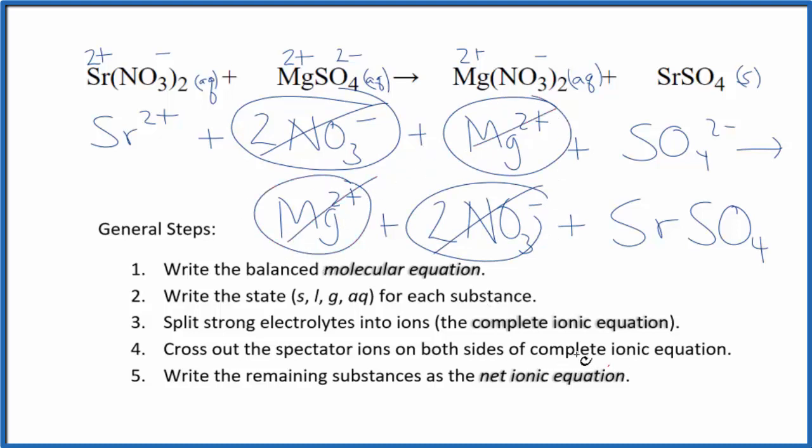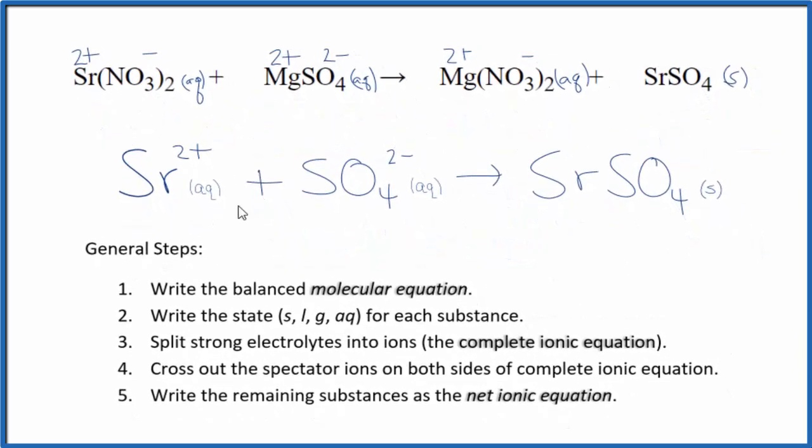What's left is the net ionic equation for Sr(NO3)2 plus MgSO4. Let me clean it up and write the states. This is the balanced net ionic equation for strontium nitrate plus magnesium sulfate.